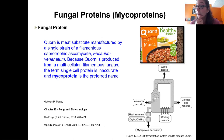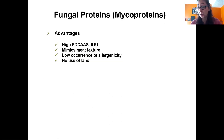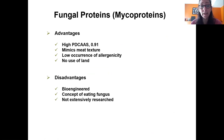Fungal protein — you've heard of Quorn. It is a multicellular filamentous fungus fermented in chambers where the fungus is grown, fed, and mycoprotein is collected at the other end. It is very nutritious, has a high PDCAS, and mimics meat texture. It has low or no allergenicity, requires no land use — it's processed in production plants. Disadvantages include that it is bioengineered, the concept of eating fungus puts some people off, and it is not extensively researched.